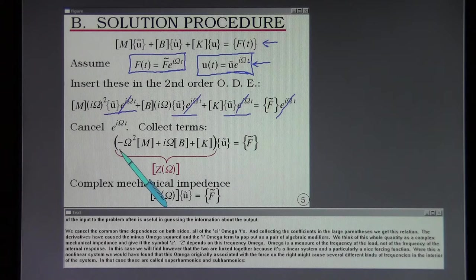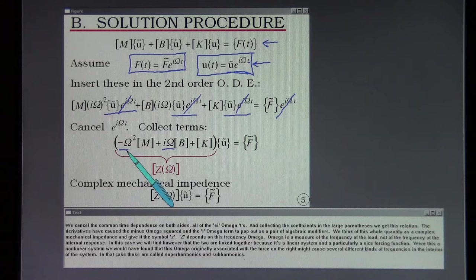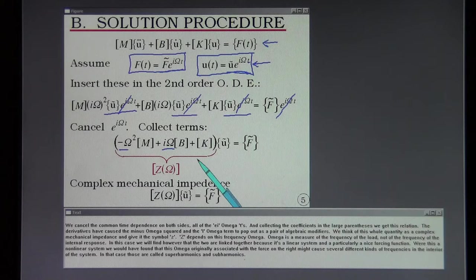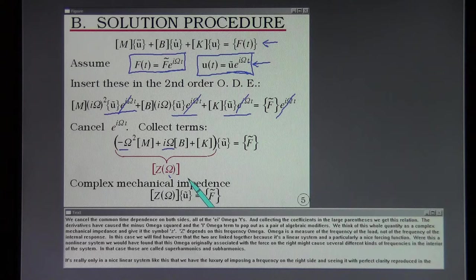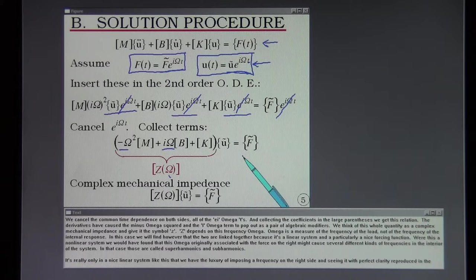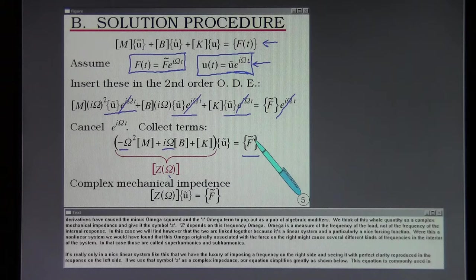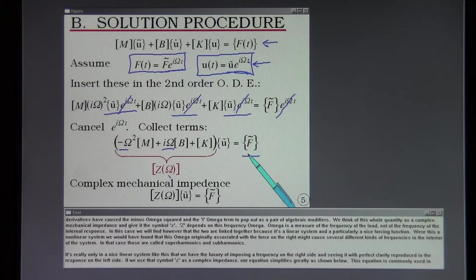The derivatives have caused the minus omega squared and the i omega term to pop out as a pair of algebraic modifiers. We think of this whole quantity as a complex mechanical impedance and give it the symbol Z. Z depends on this frequency capital omega. Capital omega is a measure of the frequency of the load, not of the frequency of the internal response. In this case we will find however that the two are linked together because it's a linear system and a particularly nice forcing function.